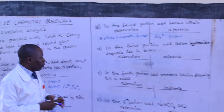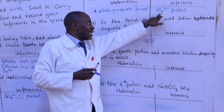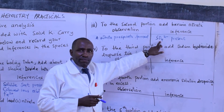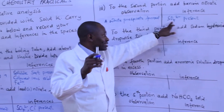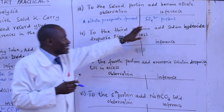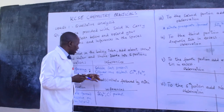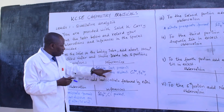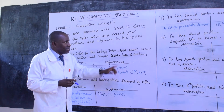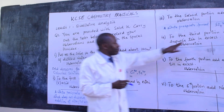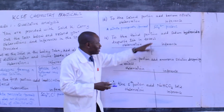We can now confirm that solid K is a salt of sulfate — specifically a soluble sulfate. Remember, in the first procedure, our inference was soluble salt present. Combined with this result, we have a sulfate that is soluble. Now let's move on to the addition of sodium hydroxide.